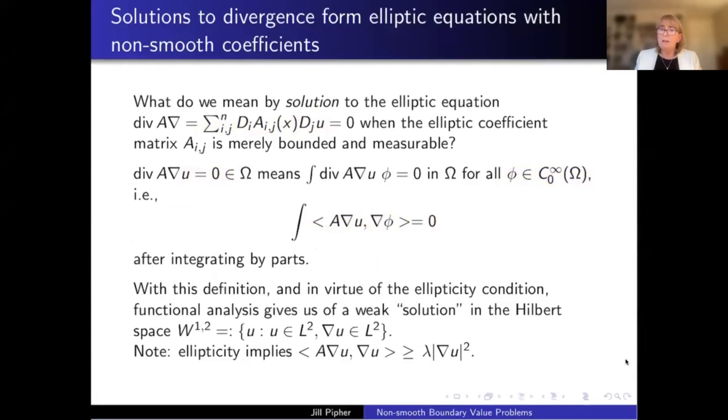Okay, so with this definition and in virtue of the ellipticity condition, we can invoke some results, some theorems and functional analysis to get a hold of something called a weak solution. Something that lives in the space of square integrable functions, whose weak derivative is also square integrable. So it's not a real solution. It's not a function that has two derivatives and so forth. That's just some element of a Hilbert space. And where we're using ellipticity to grab a hold of our solution is to say that because of ellipticity, this pairing A grad U paired with grad U really behaves like the inner product of the gradient with itself. It really is bounded from above and below by terms that look like this. So it's an inner product.